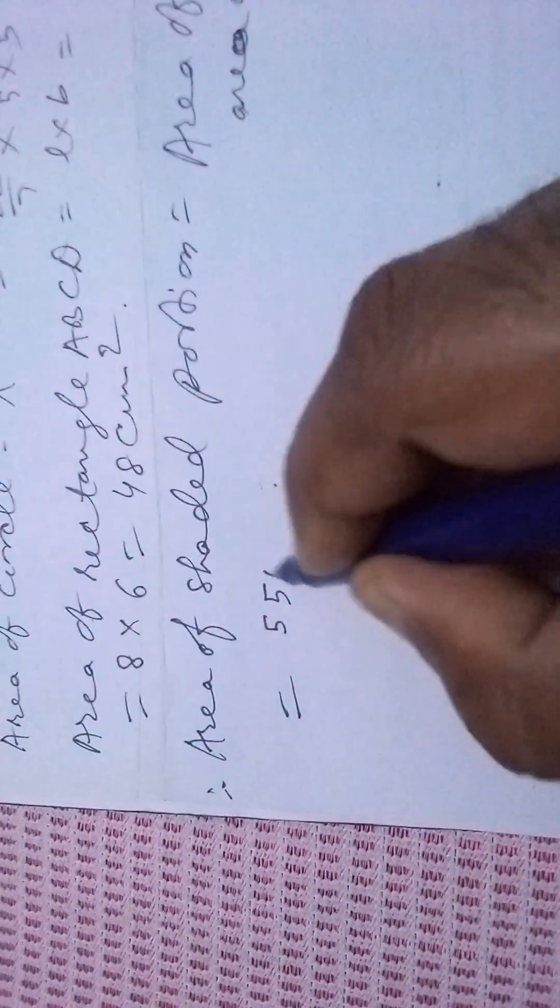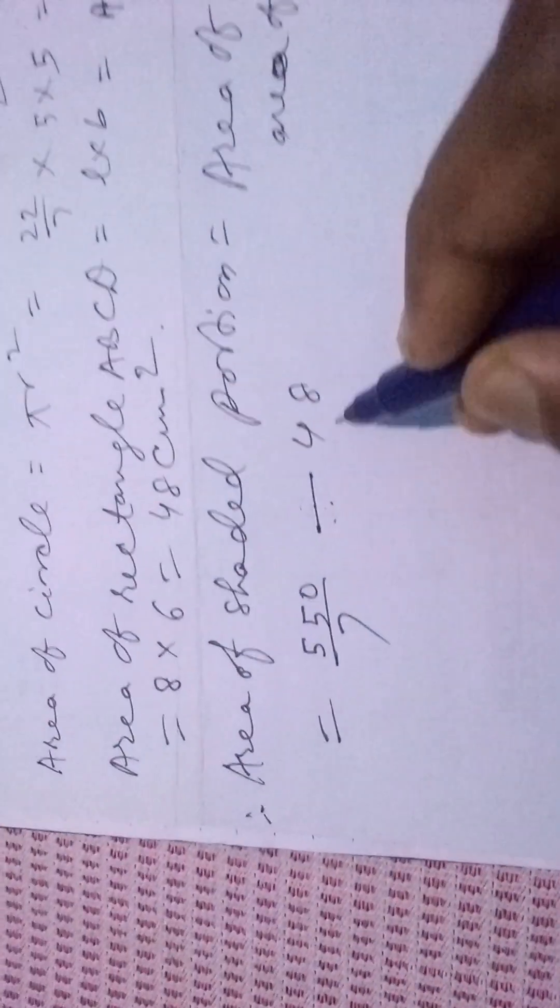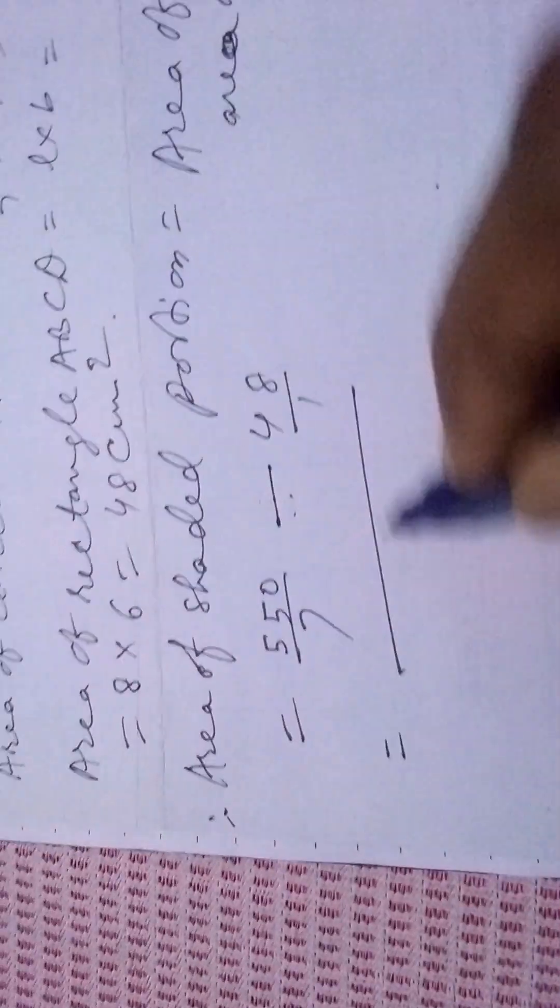Area of circle we have got 550 by 7 cm squared minus area of rectangle is 48 cm squared. You find the LCM, it is 7.